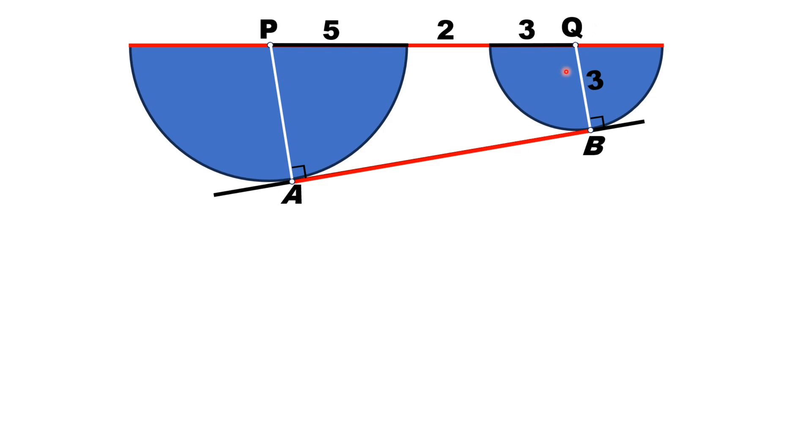This length is 3 units. We draw a line segment from point B to point C in such a way that line BC is parallel to line PQ. Since PC length is equal to the length QB, PC is 3 units.